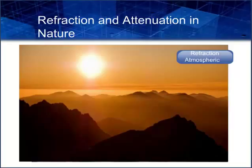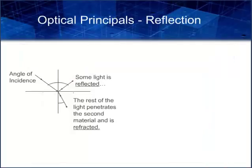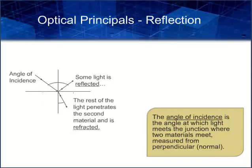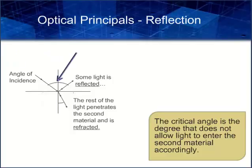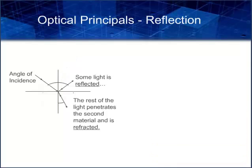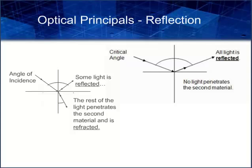Sunrise in space, observed through the space shuttle, vividly displays the Earth's atmospheric refraction of light. The optical principles of refraction and reflection work together in fiber optics. The angle of incidence determines if light is refracted or reflected — it is the angle at which light enters the junction where two materials meet, measured from perpendicular or normal. The critical angle is the degree that does not allow light to enter the second material. Reflection occurs when the angle of incidence is more than the critical angle; refraction occurs when it is less. In fiber optics, this angle is usually about 80 degrees from normal, so very shallow approach angles of 10 degrees or less relative to the surface result in reflection.